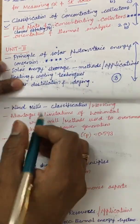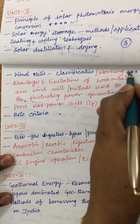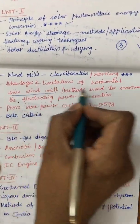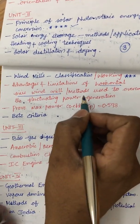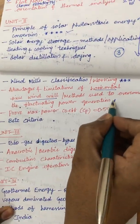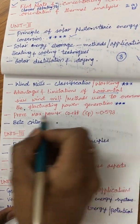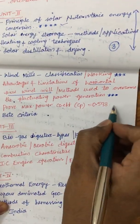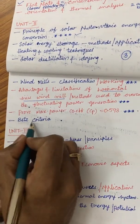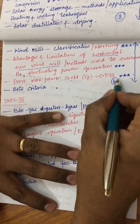The classification and working of windmills is an important question expected for 7 marks. The advantages and limitations of horizontal axis windmills have been asked several times in previous year question papers, along with methods used to overcome fluctuating power generation. Proving that the maximum power coefficient is 0.593 (Betz limit) may also be asked, along with a related problem — these concepts together form the fourth expected question.